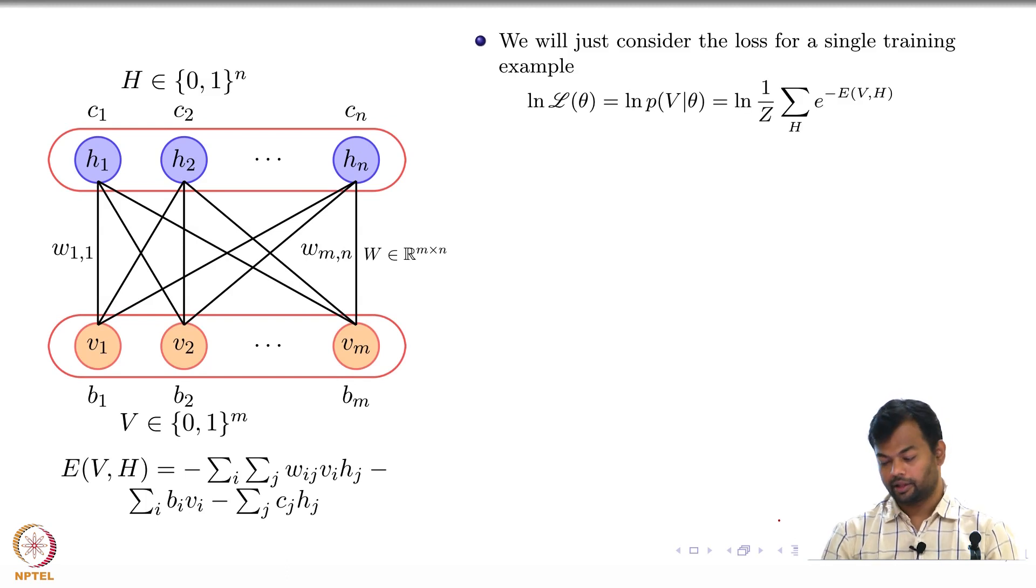And this probability I can write as this. What have I done here? I have marginalized over all the hidden variables. What is Z? Partition function, just to make sure that this is a probability distribution. And Z is a summation over v comma h, right? It's a summation over all possible values of v comma h, and here you already have a summation of all possible values of h.